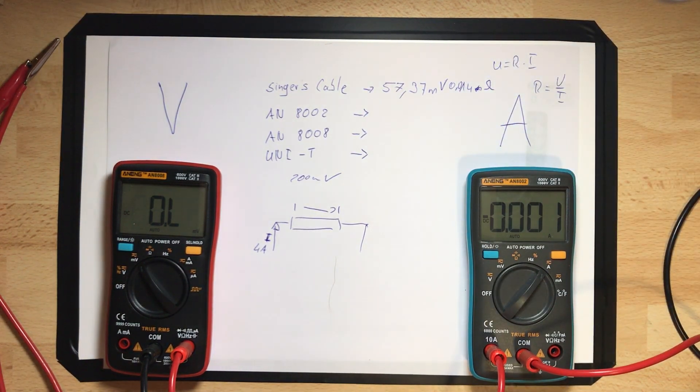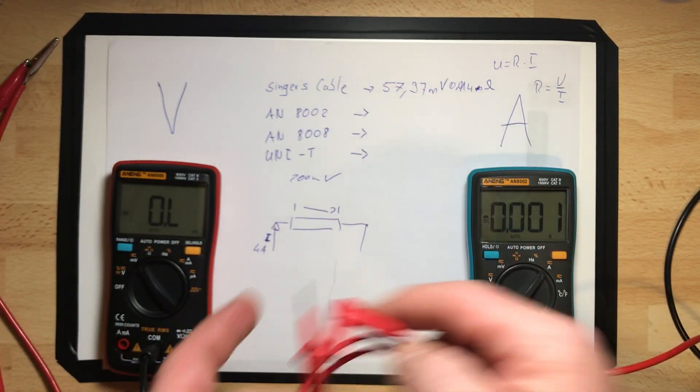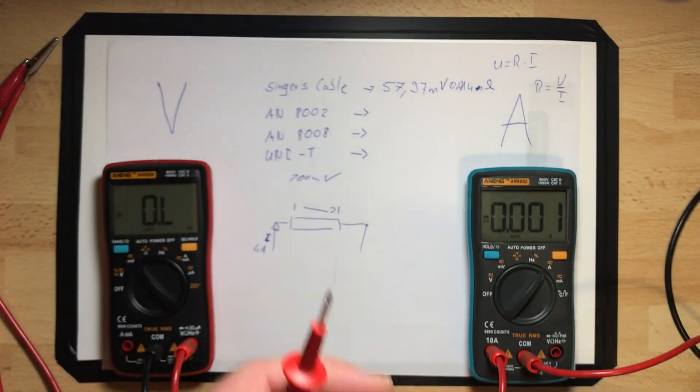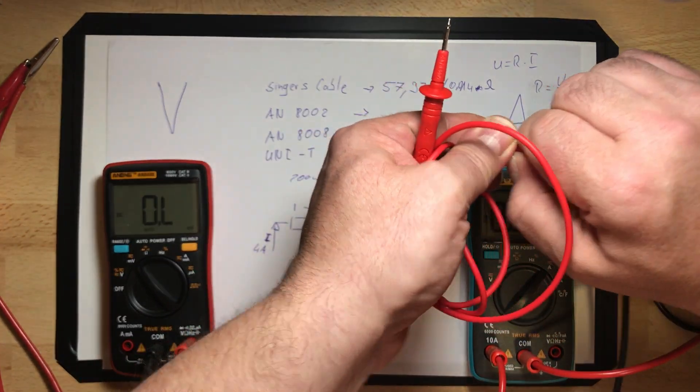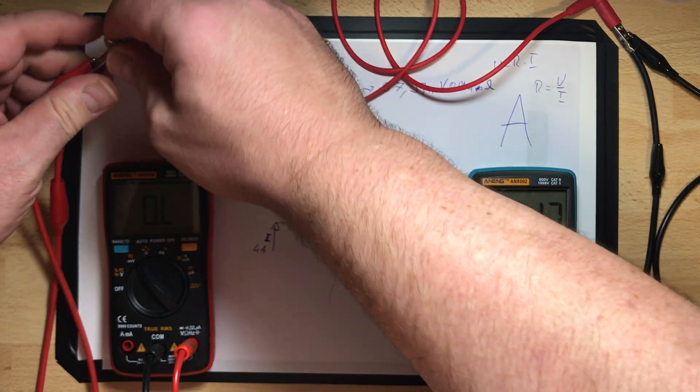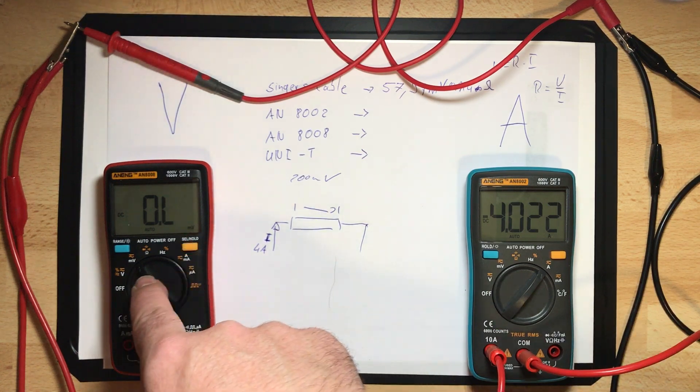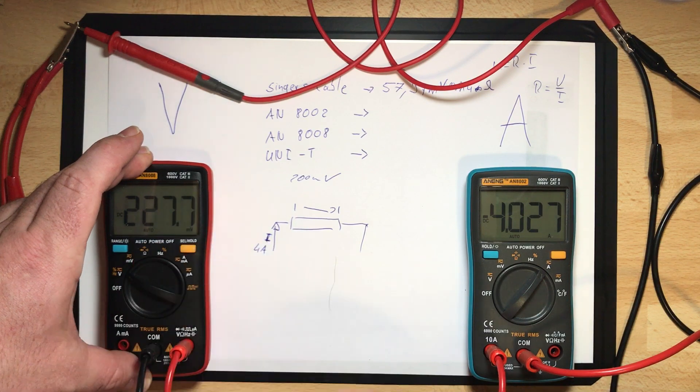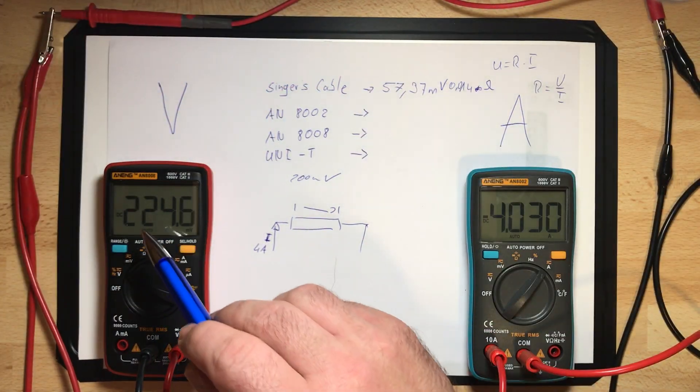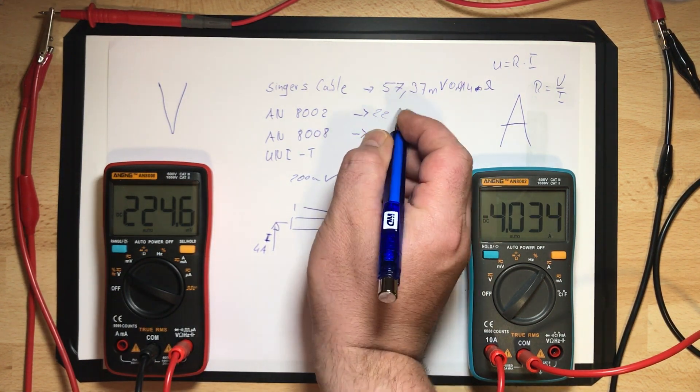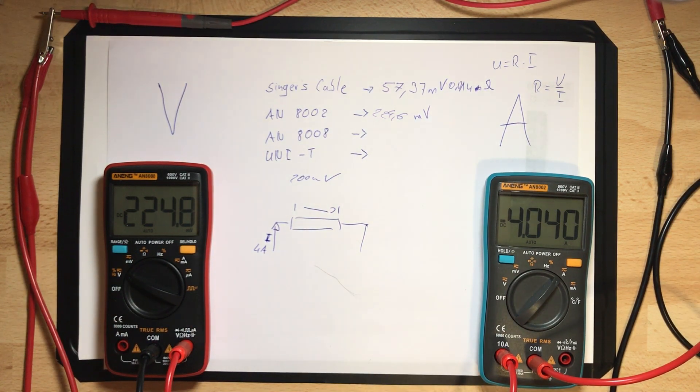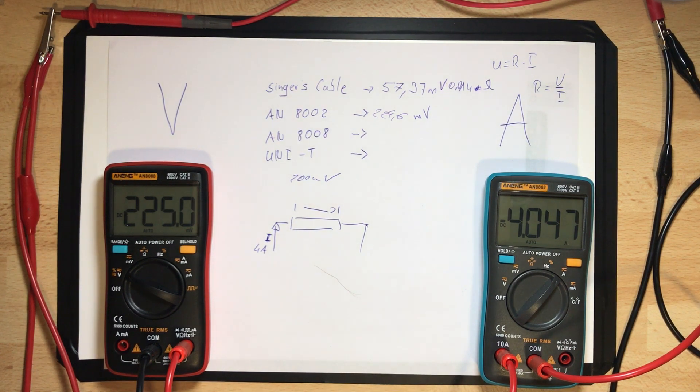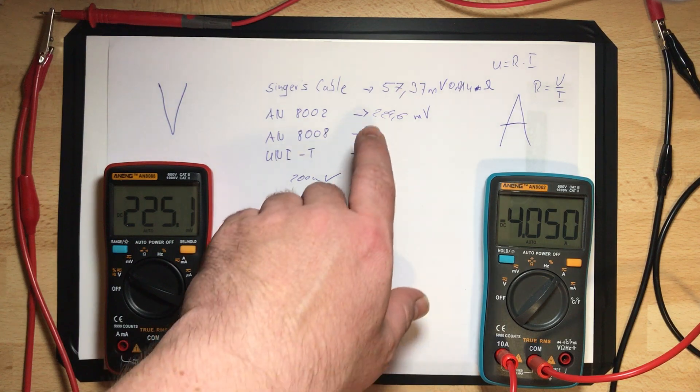Next is the cable from the 8002. I choose the red one. This is a little bit tricky because I have to get in there. We still have 4 amps but the millivolt range of the AN8008 overloaded. I have 224.6 millivolts. The cable has four times the millivolt drop, so the probe lead that comes with the Aneng is not as good as the one I'm using for my cables.